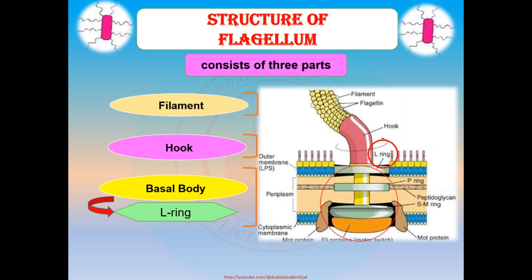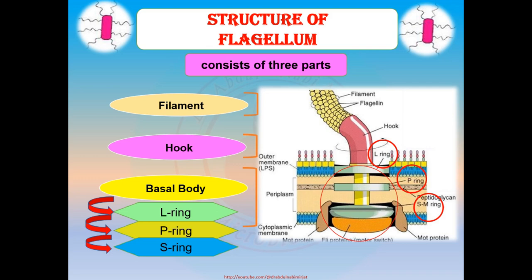The L-ring is attached to the outer membrane of gram-negative bacteria. Another ring is the P-ring, also called the peptidoglycan ring, which is attached to the peptidoglycan layer. The S-ring is also called the surface or basal ring and is static in nature.